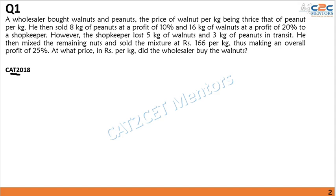Question number one has appeared in CAT 2018. CAT 2018 had quant on the tougher side. A wholesaler bought walnuts and peanuts, the price of walnut per kg being thrice that of peanut per kg. He sold 8 kg of peanuts at a profit of 10%, 16 kg of walnuts at a profit of 20%. The shopkeeper lost 5 kg of walnuts and 3 kg of peanuts in transit. He then mixed the remaining nuts and sold the mixture at 166 rupees per kg, making an overall profit of 25%.